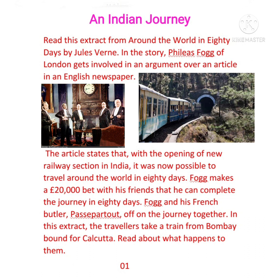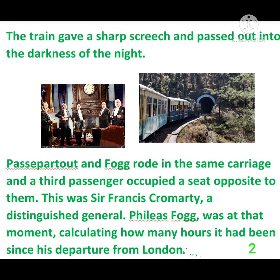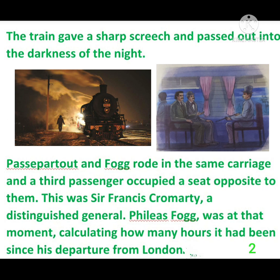At the Reform Club in London, Fogg got involved in an argument over an article in the Daily Telegraph, stating that with the opening of a new railway section in India, it was now possible to travel around the world in 80 days. So Fogg accepted a wager for 20,000 Great British pounds and departed from London by train. In this extract, the travelers took a train from Bombay bound for Calcutta. The train gave a short screech and passed out into the darkness of the night — the train started moving at night.